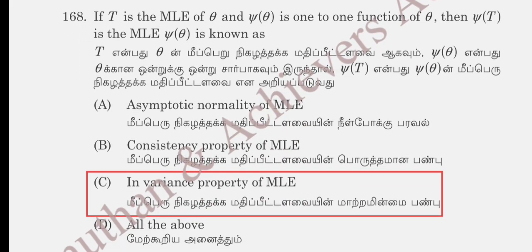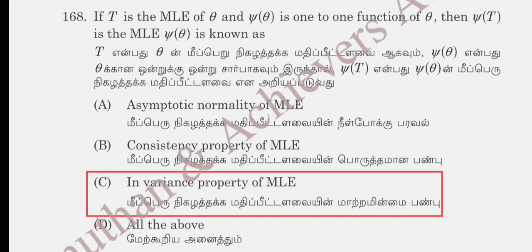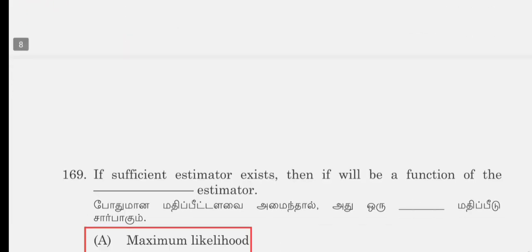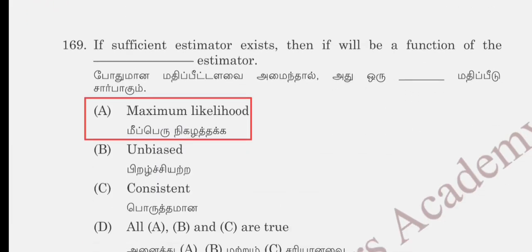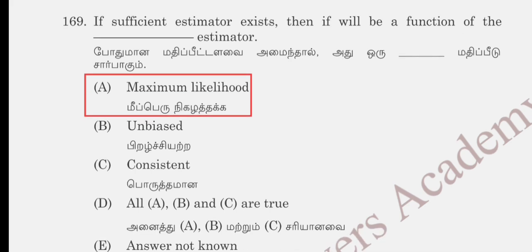One famous problem: if T is the MLE of theta and psi(T) is a one-to-one function of theta, then psi(T) is the MLE of psi(theta). This is the invariance property of MLE. Options: asymptotic normality of MLE, consistency property, invariance property, or all of the above. Invariance property of MLE is the correct answer for question 168.